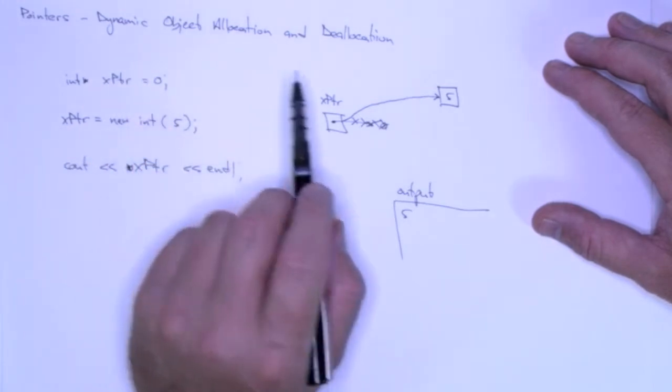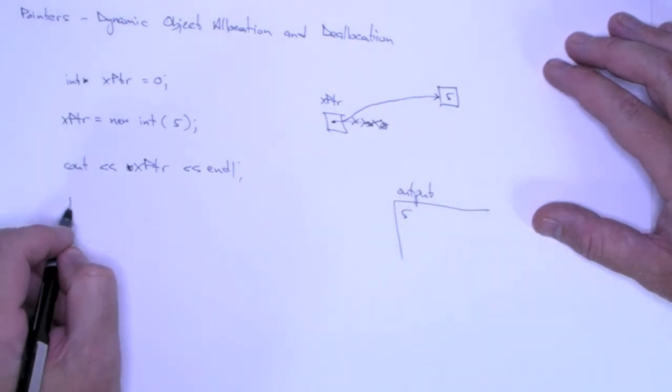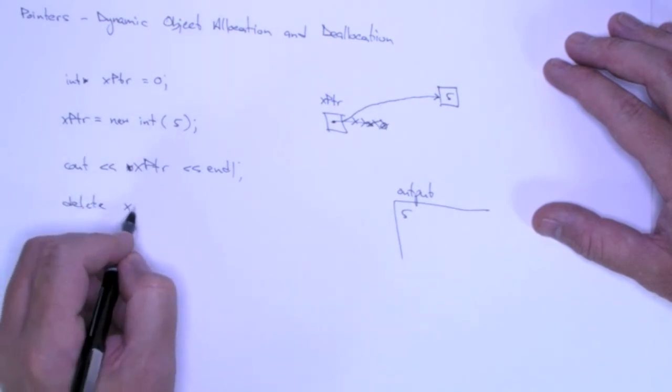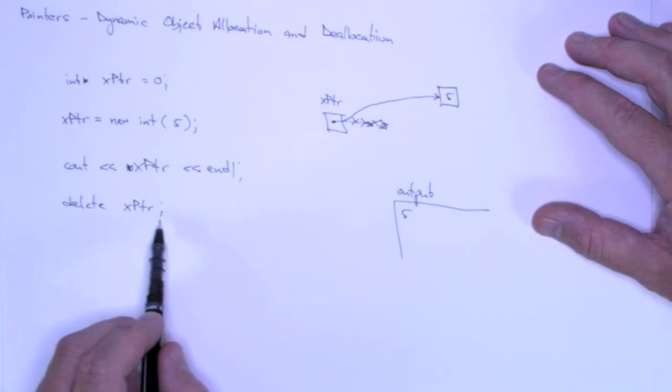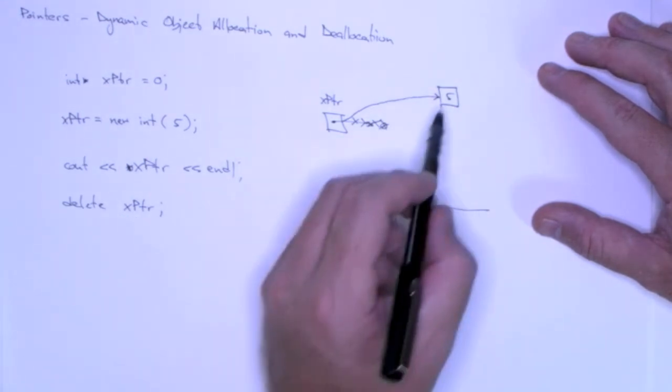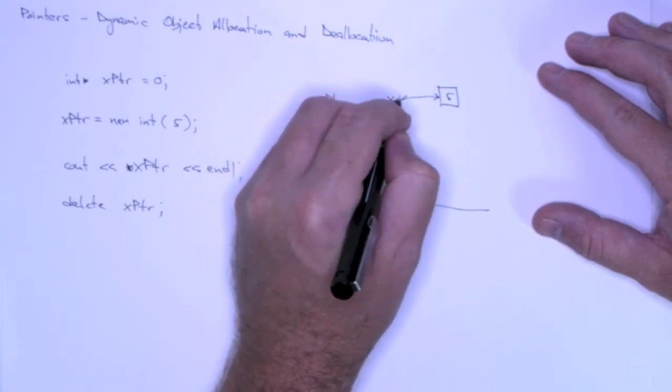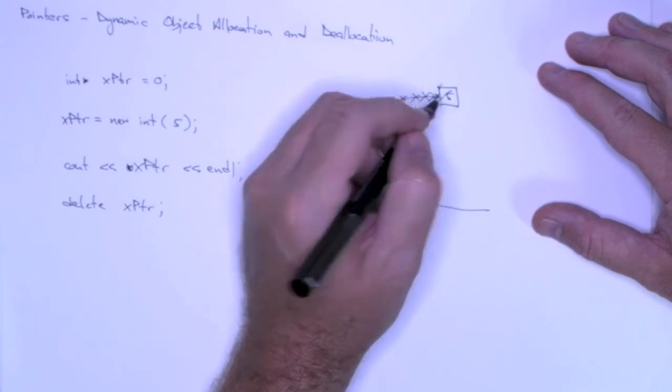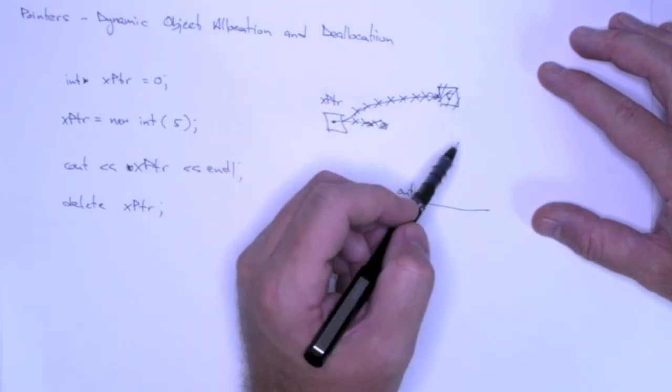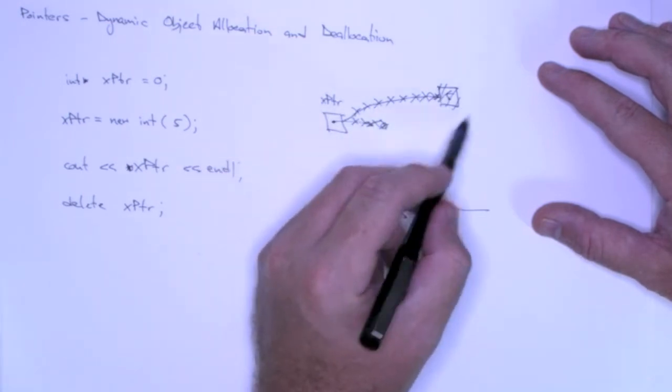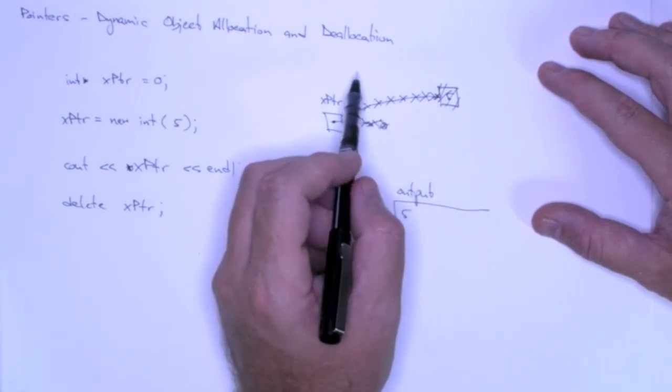Anything that we dynamically allocate, we have to dynamically deallocate or free. And the operator for doing that is called delete. And we give it a pointer. And what delete does is it destructs or deallocates the object that the pointer points to. So in this case, we're going to deallocate the integer 5. And when we do that, then x pointer will no longer point to that integer. Now x pointer will still hold the address of where this object was. But the integer object 5 will be deallocated, it will be freed, or it will be destructed.